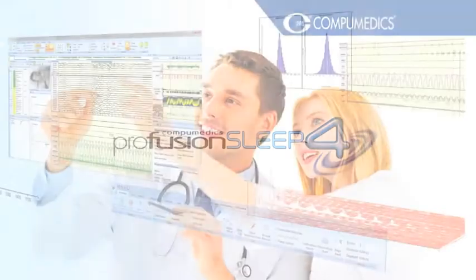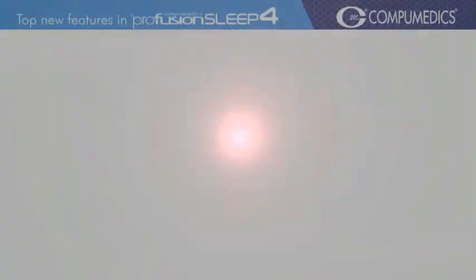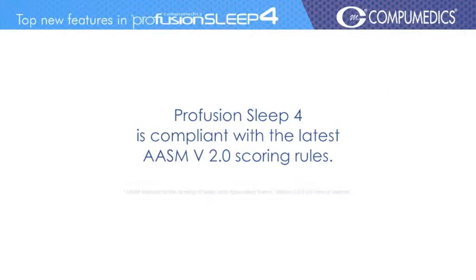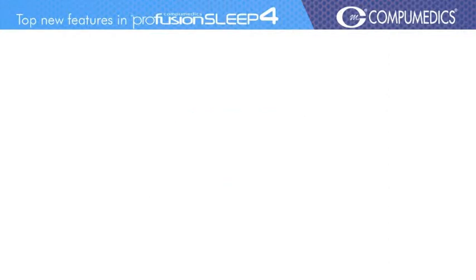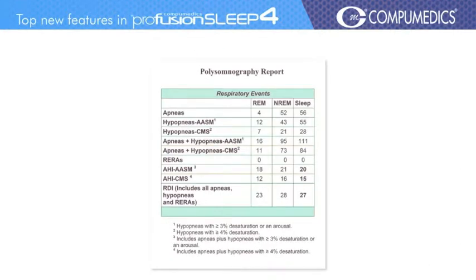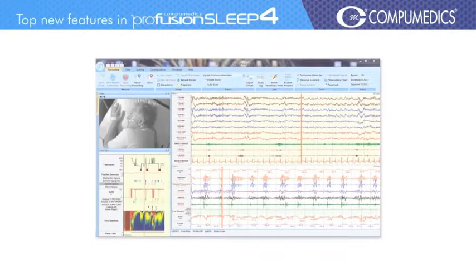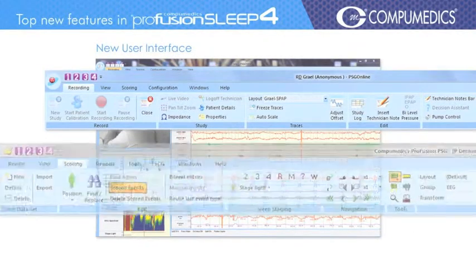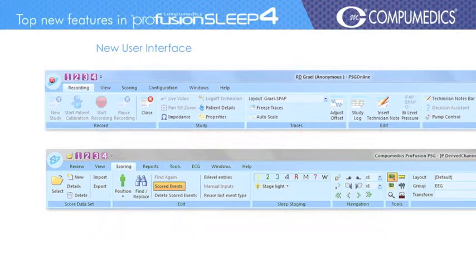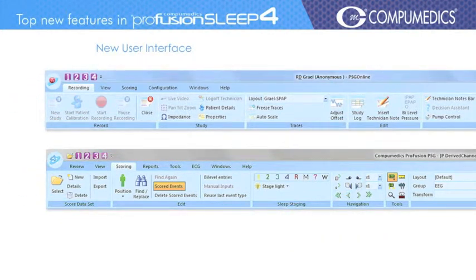Profusion Sleep 4 is compliant with the latest AASM V2 scoring rules and allows expanded reporting for hypopneas. It features a new user interface with a totally redesigned ribbon bar for ease of use and access. Related functions are now organised into logical groups, making them easier to find.